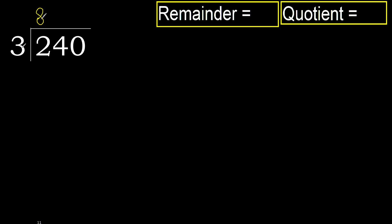3 multiplied by 8 is 24. 24 is not greater. Subtract: 24 minus 24 equals 0.